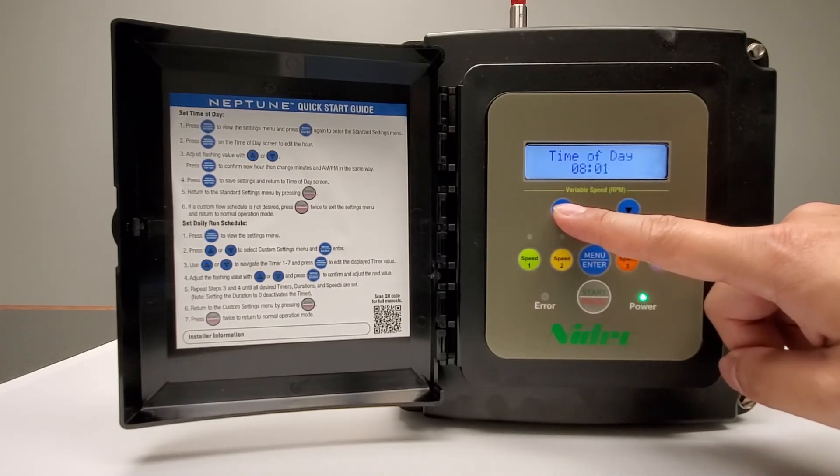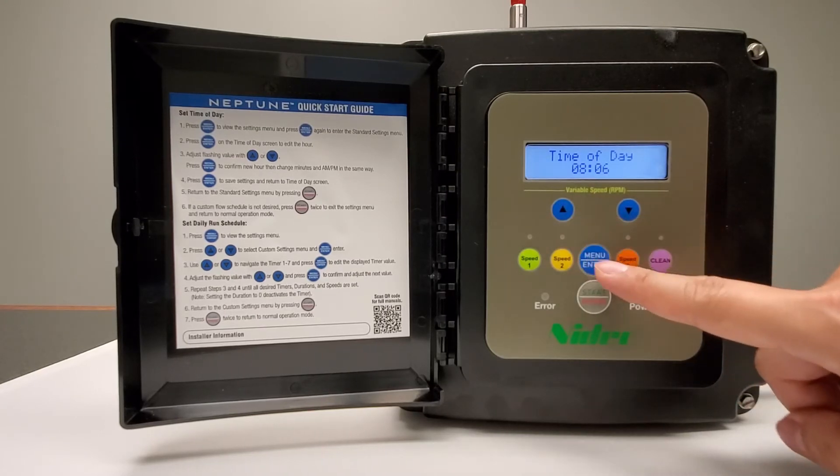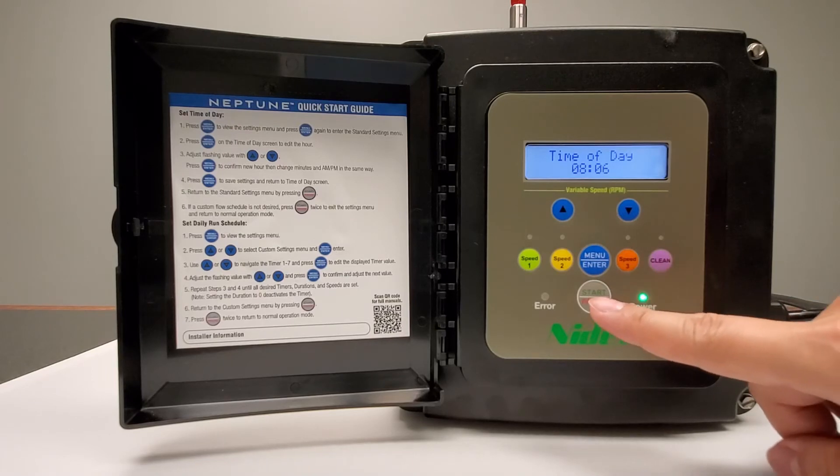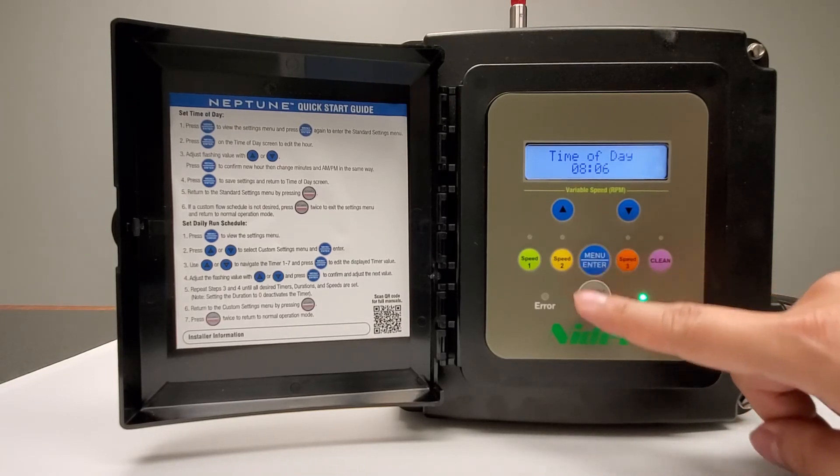Just like when you were setting the hours on the Neptune motor, you can use the up and down arrow keys to go through and select the correct minutes. After setting the correct minutes, press the menu/enter button.